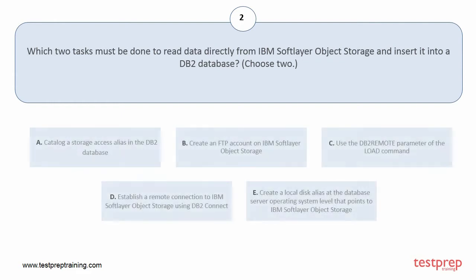Your options are: A. Catalog a storage access alias in the DB2 database. B. Create an FTP account on IBM SoftLayer object storage. C. Use the DB2 remote parameter of the load command. D. Establish a remote connection to IBM SoftLayer object storage using DB2 Connect. E. Create a local disk alias at the database server operating system level that points to IBM SoftLayer object storage.